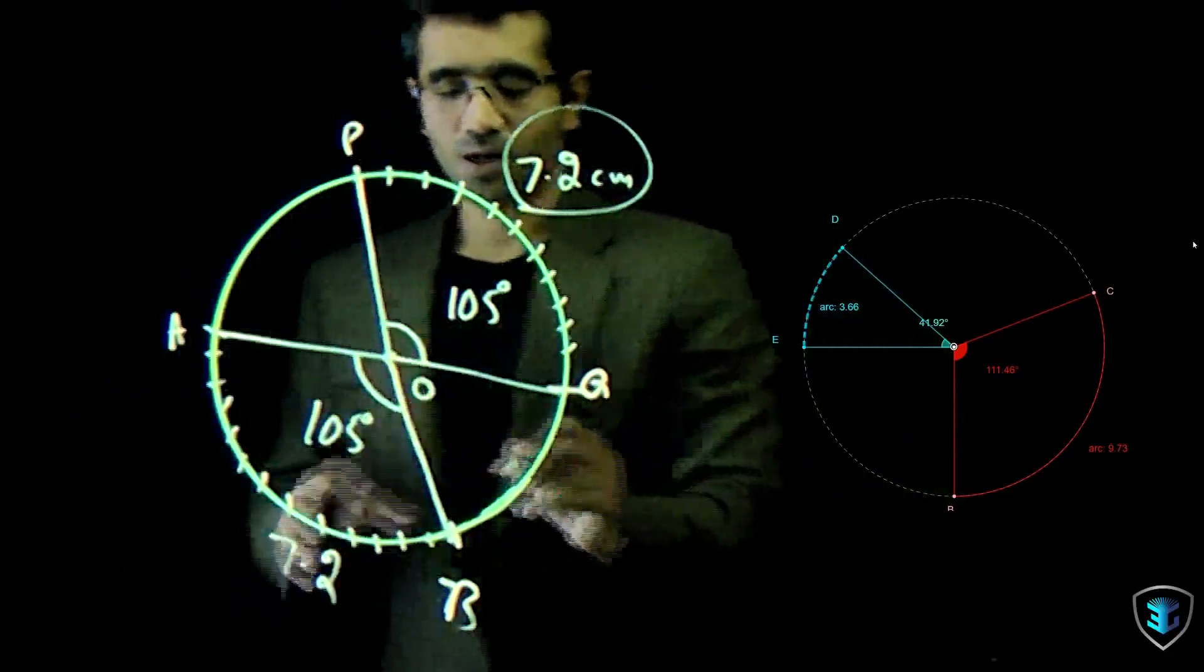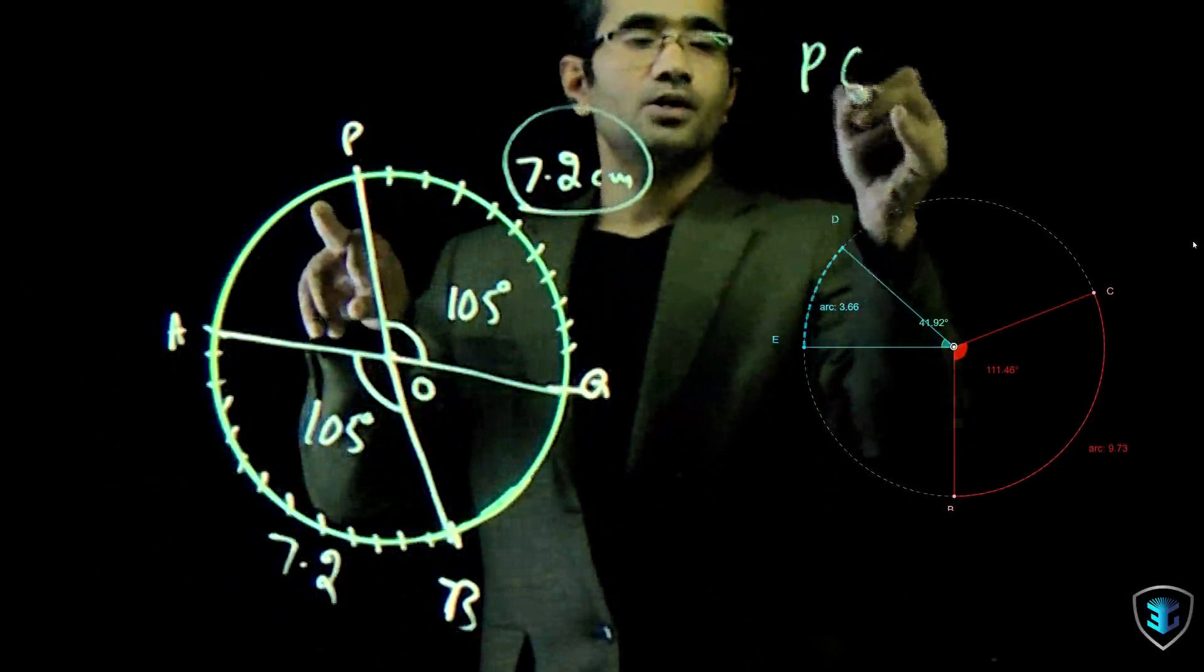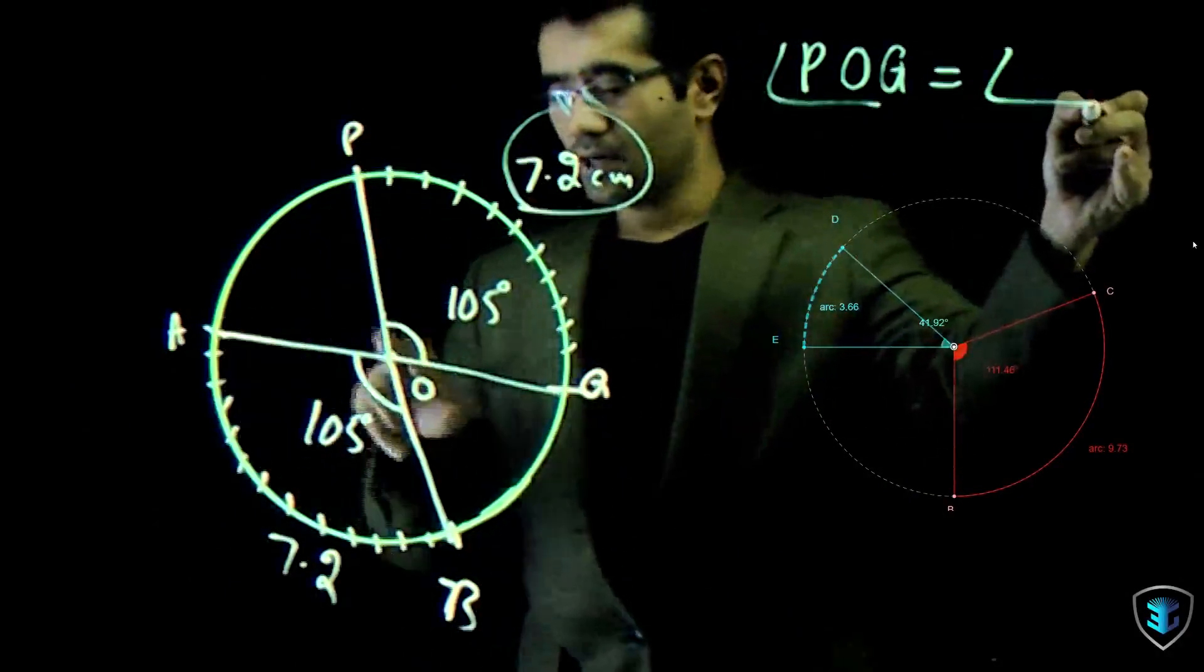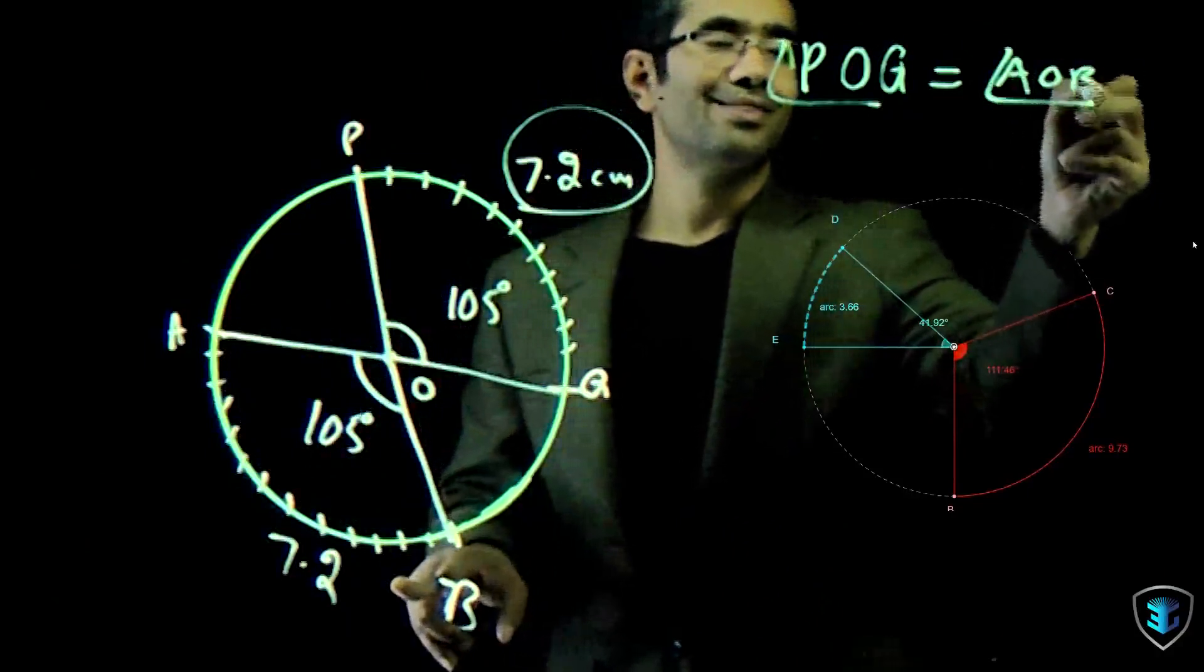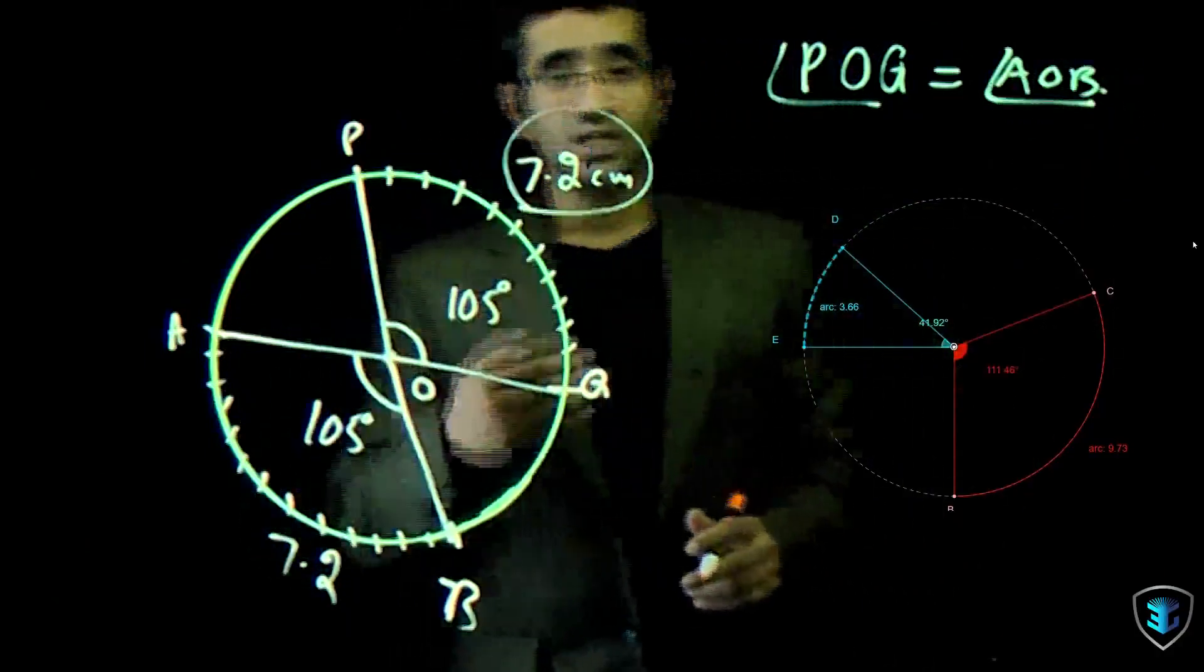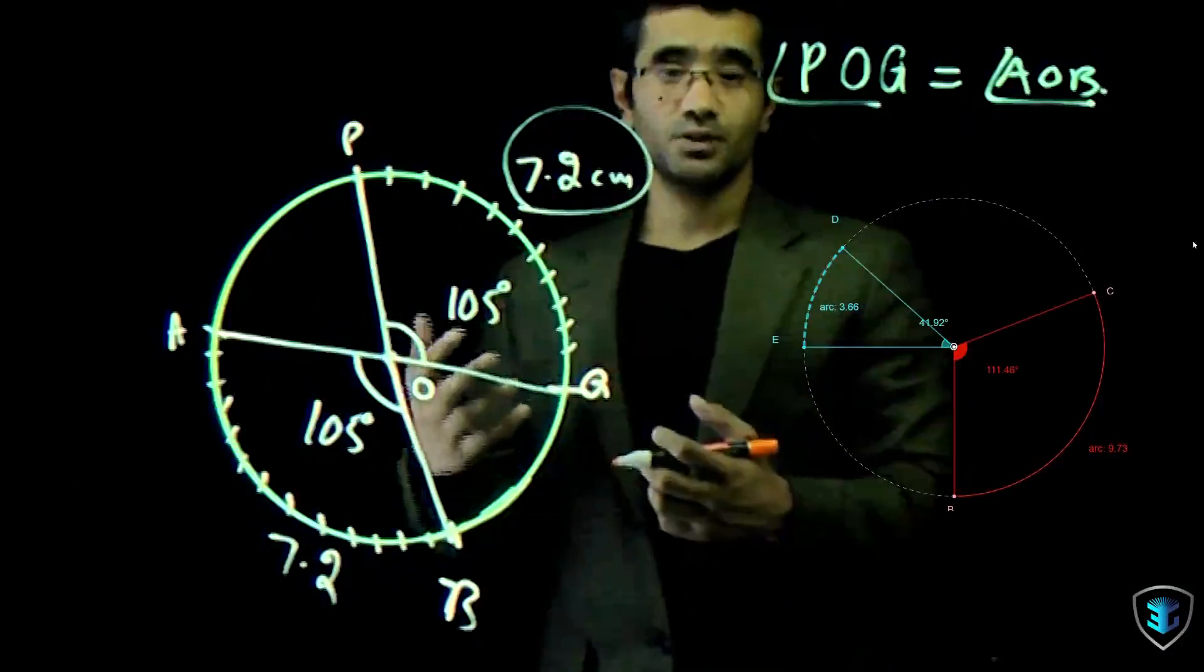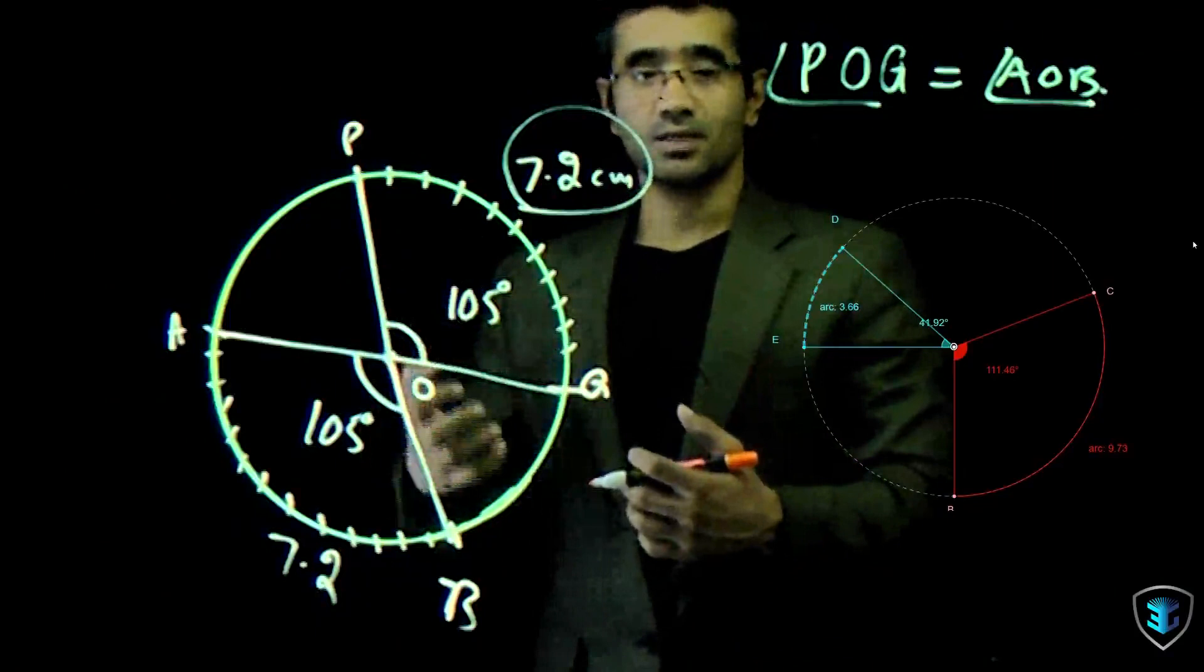So if I name this to be O, I can write the angle POQ would be equal to the angle AOB, and that is a fact. We need to store it in our memory so that we can use this while doing problems in this year and coming years in mathematics.